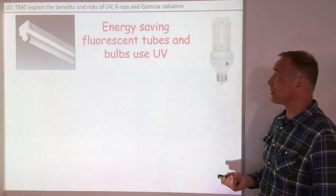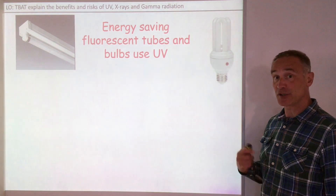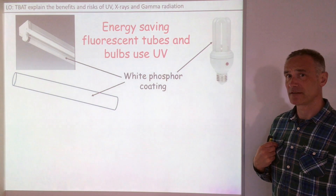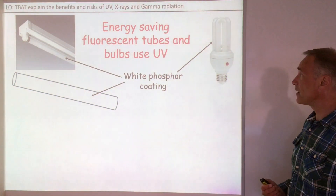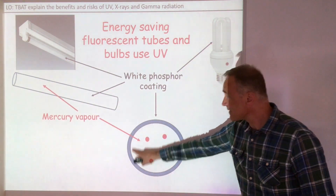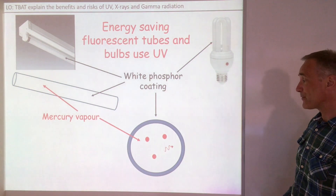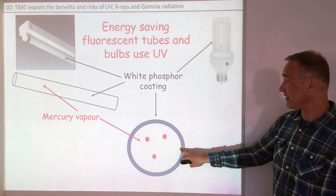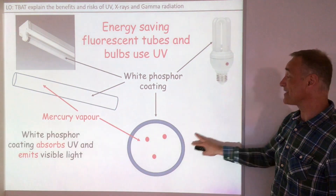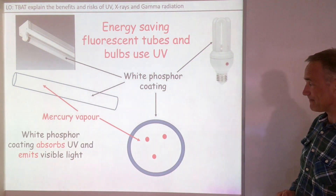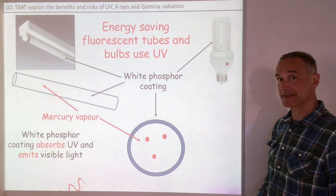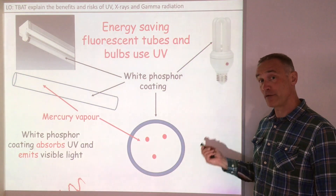Secondly, energy saving light bulbs and fluorescent tubes use UV. They don't produce UV out because they produce visible light. They're coated in a white phosphorous coating and inside they've got mercury vapour. The mercury vapour emits ultraviolet light and then the white phosphorous coating absorbs that ultraviolet light and emits visible light. So UV turns into visible light and it's emitted. Those are two key uses of UV.